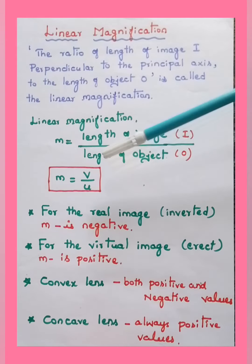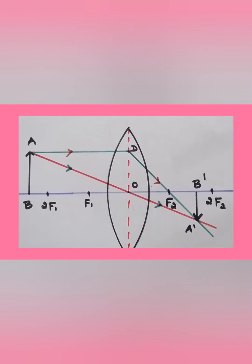Let us check with a few ray diagrams. We can observe in this ray diagram of convex lens the image formed is inverted or real image, hence the linear magnification for this image is negative value.